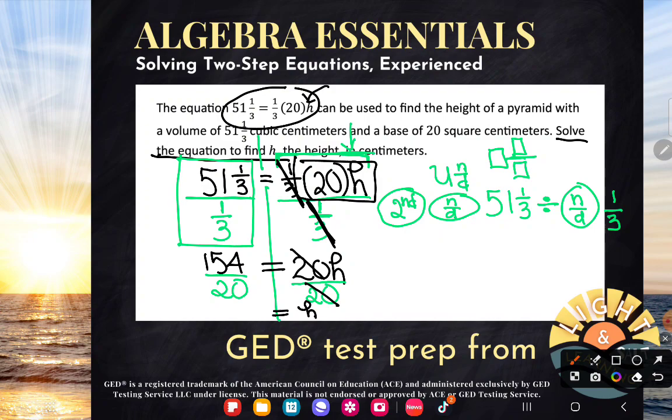And that's going to be real nice on that right-hand side because 20 divided by 20 is just 1. We just have one single solitary h all by itself. And then 154 divided by 20, what does that equal? 7.7.